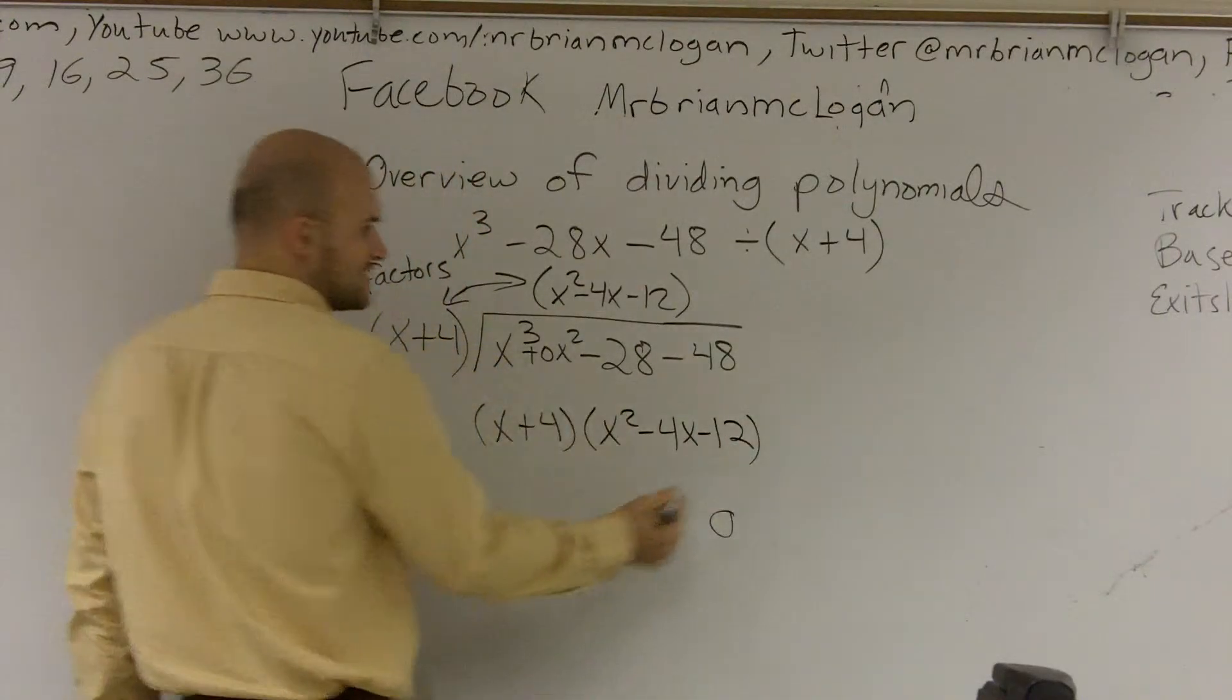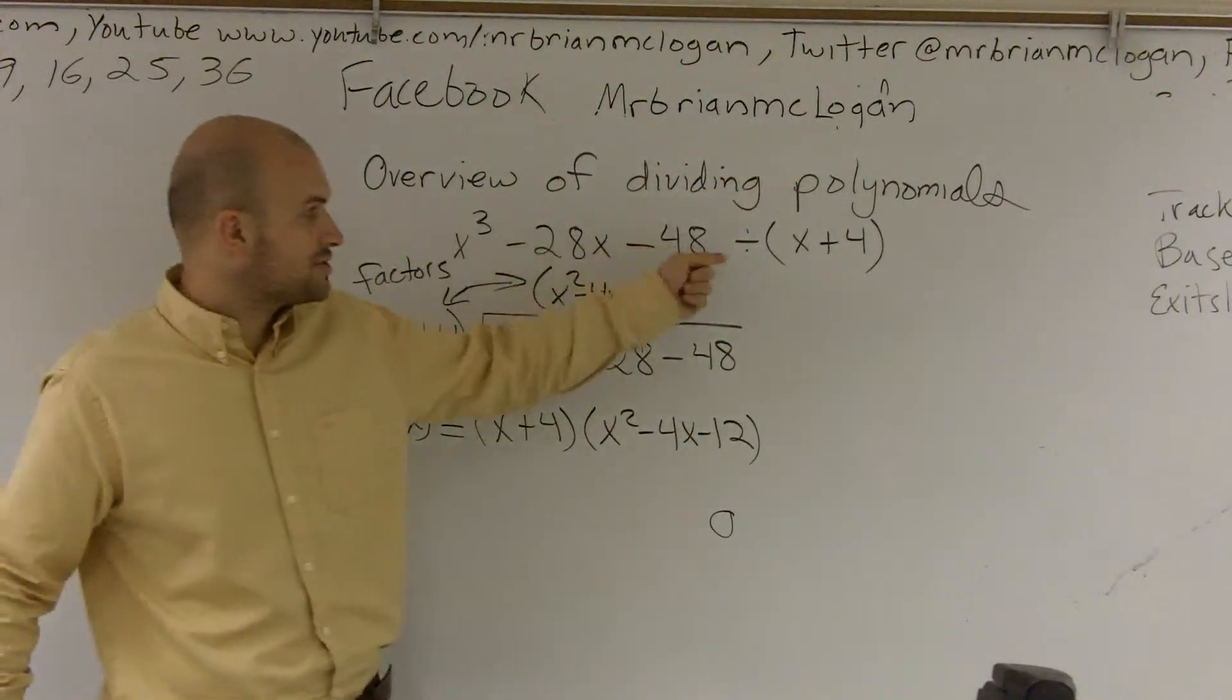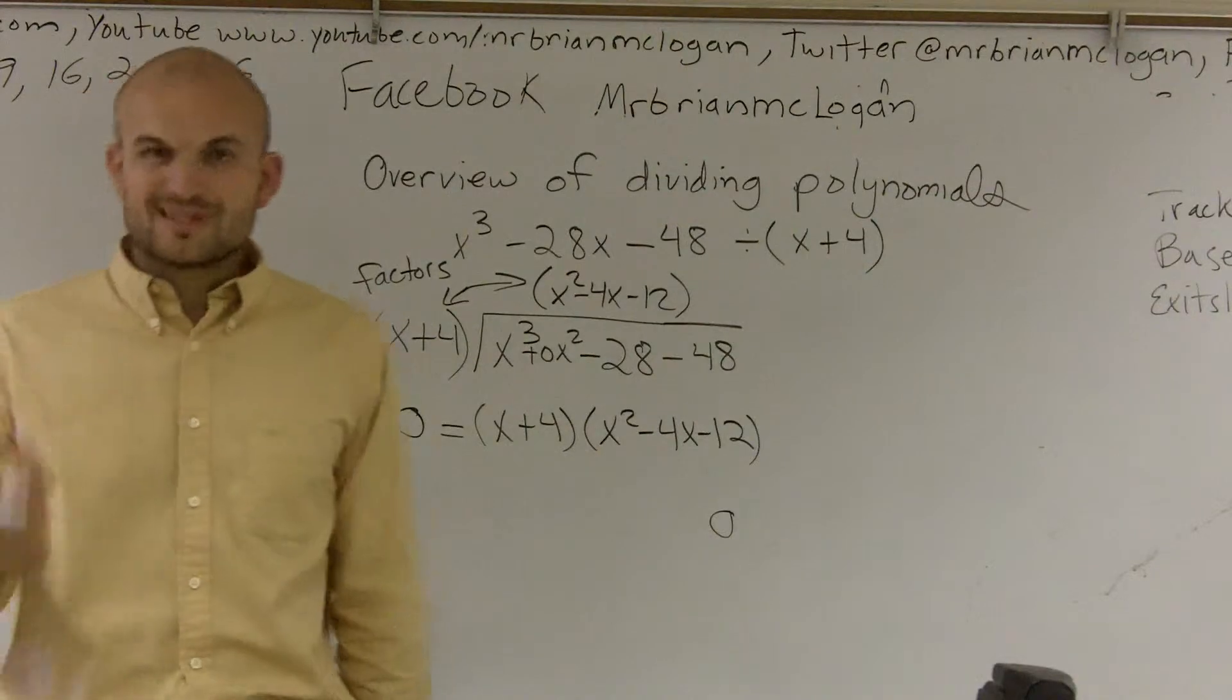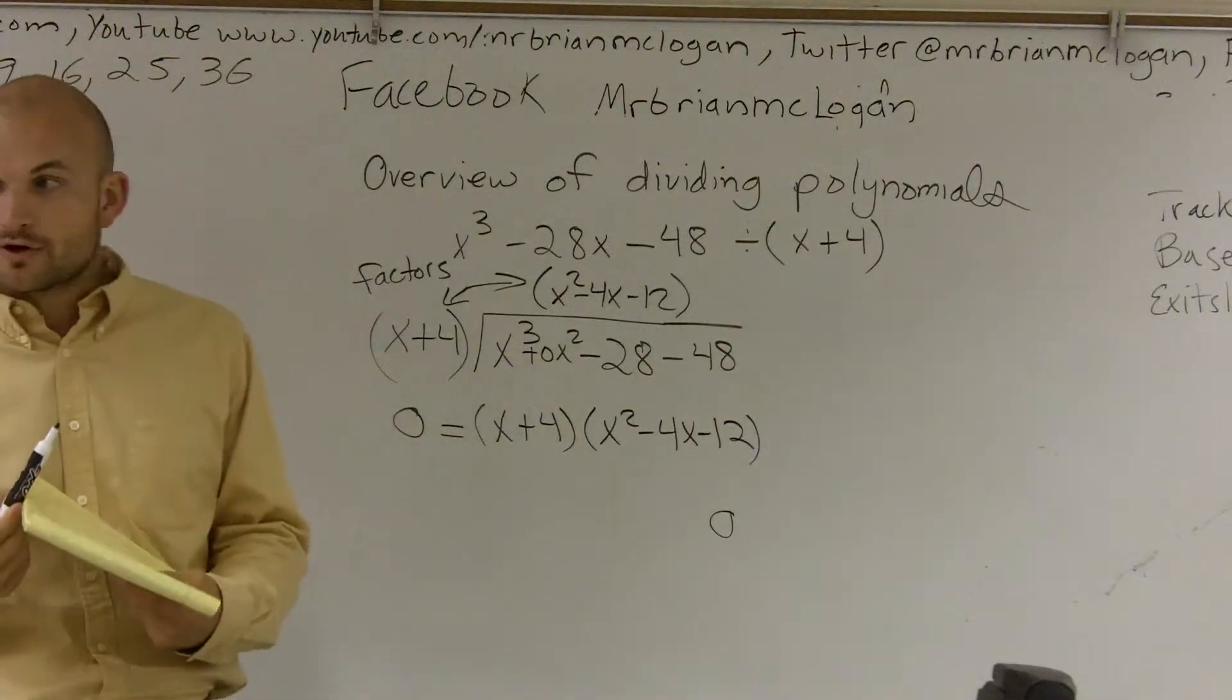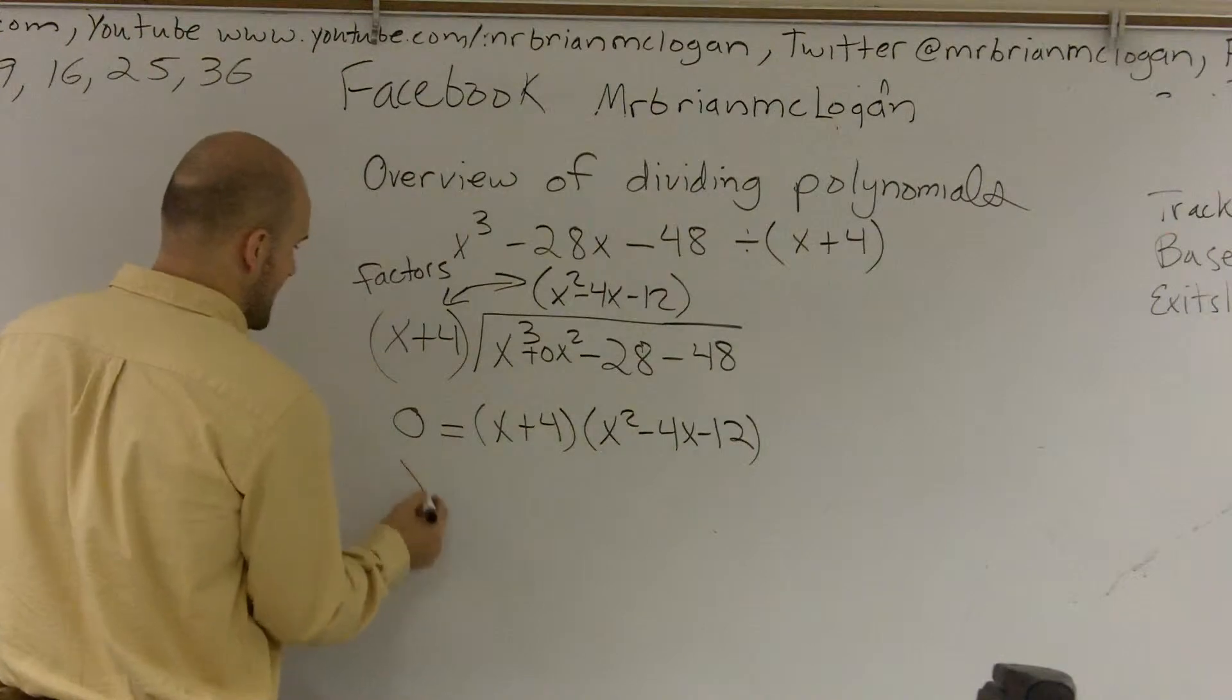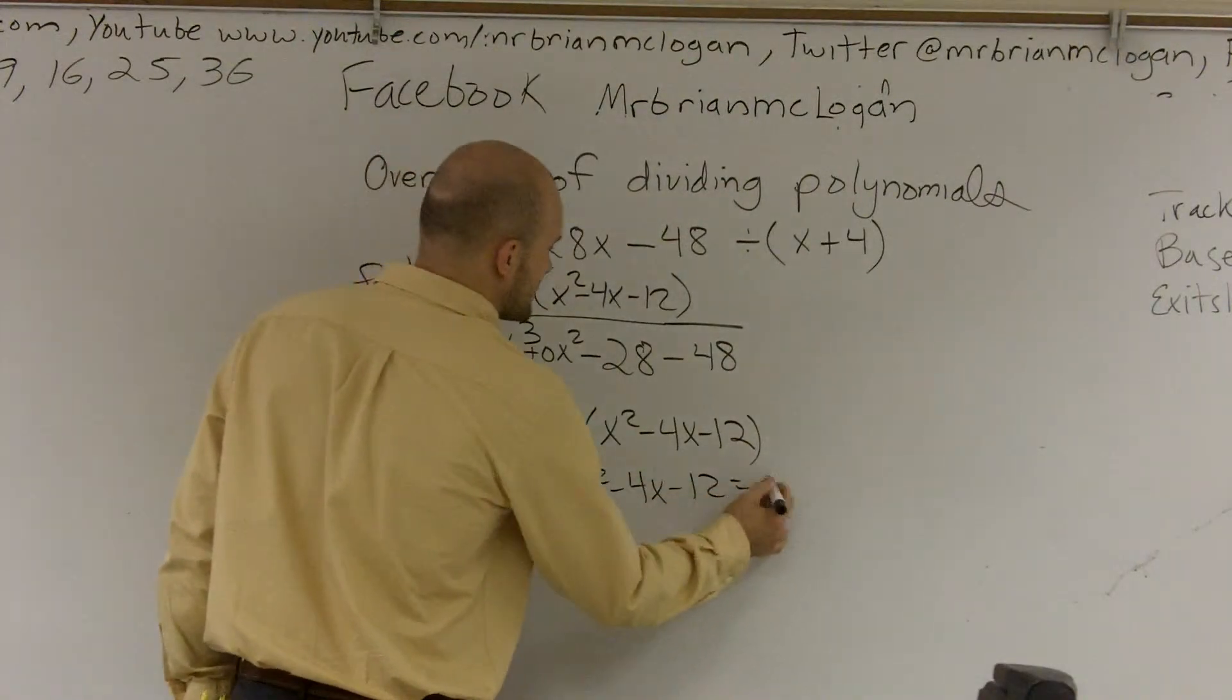First of all, our two factors equal our f of x. So therefore, if I multiply these back out, I would get my original function again. But what I'm really concerned about is finding the zeros. And what do the zeros tell you? Remember, the zeros are going to be your x-intercepts of your graph. They're going to tell you what x values make our function 0. So I can say that x plus 4 equals 0, and x squared minus 4x minus 12 equals 0.